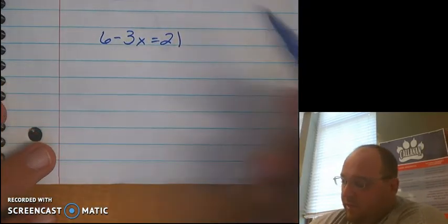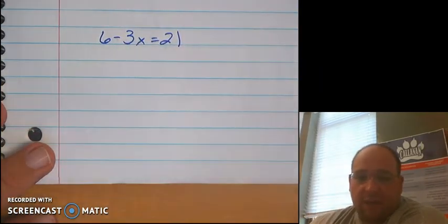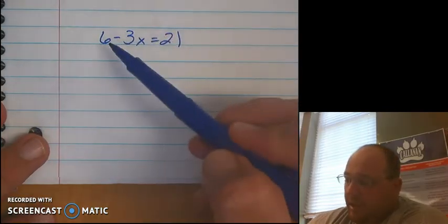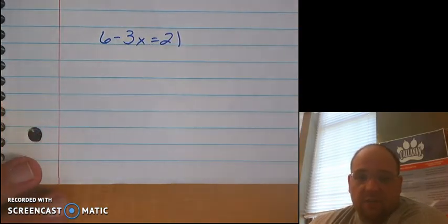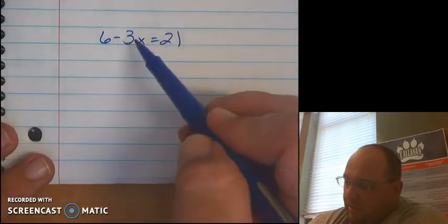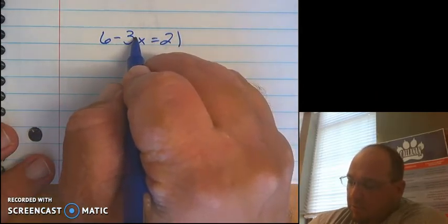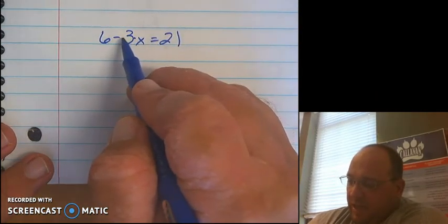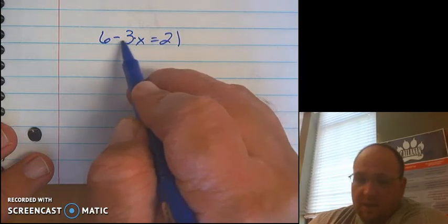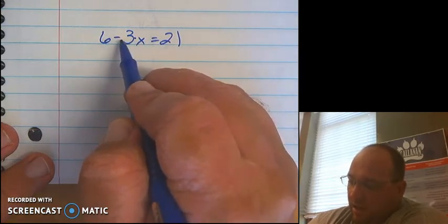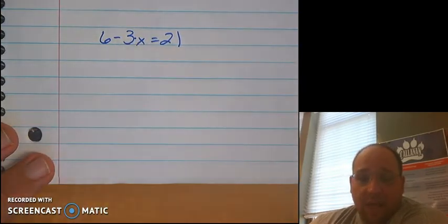The problem that we have with this is this minus 3x. A lot of kids want to add 3 to remove that 3. But because this 3 is associated with the x here, because of the multiplication, this isn't necessarily a negative. This isn't a minus 3. This is actually, we can treat this as a negative 3x.